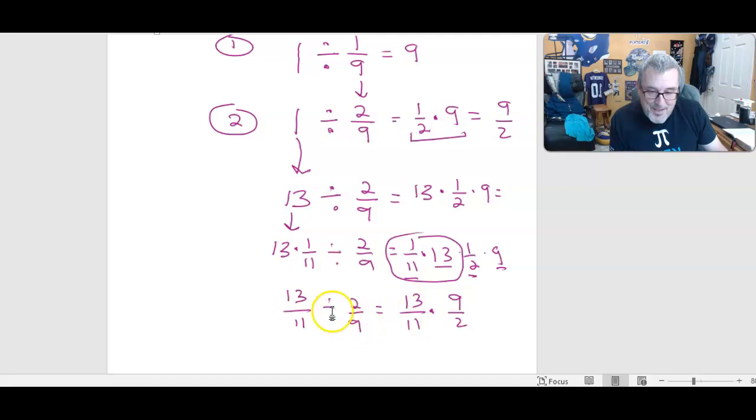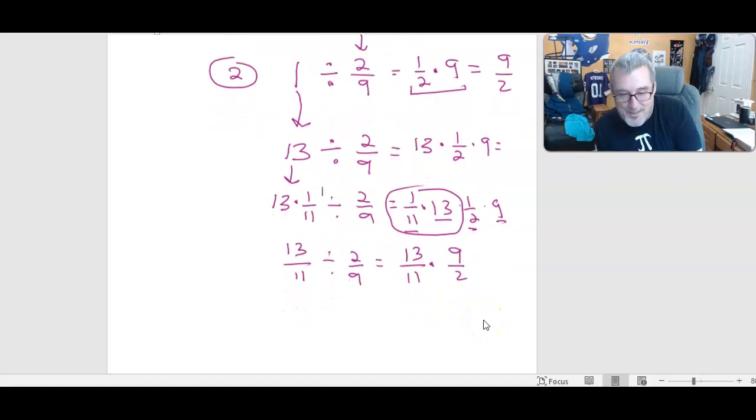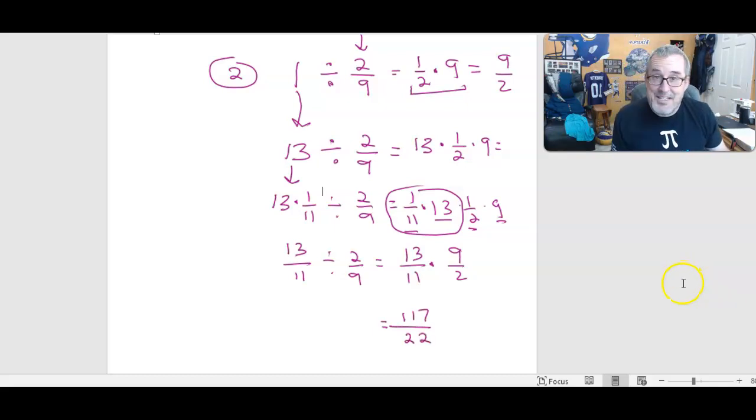13/11, there it is. Divide becomes multiply. 2/9 becomes 9/2, the reciprocal. So there's the algorithm. And then if you wanted to actually work this out, 13 times 9 is 117. And 11 times 2 is 22. So it all comes down to 117/22.